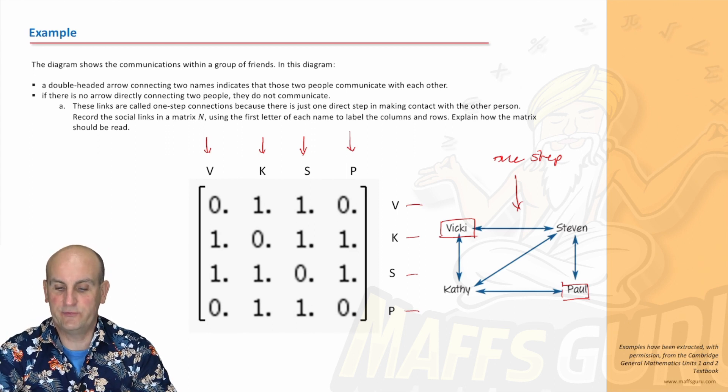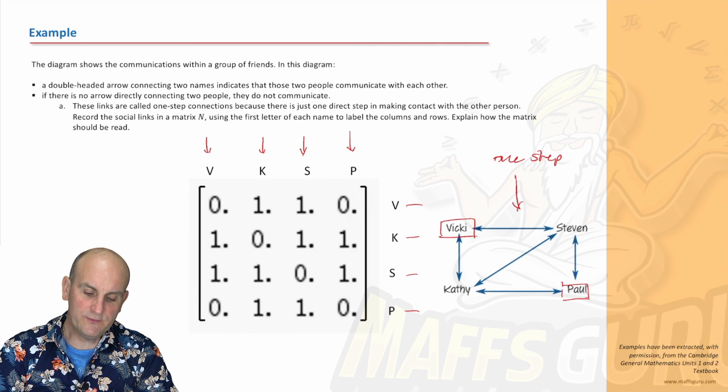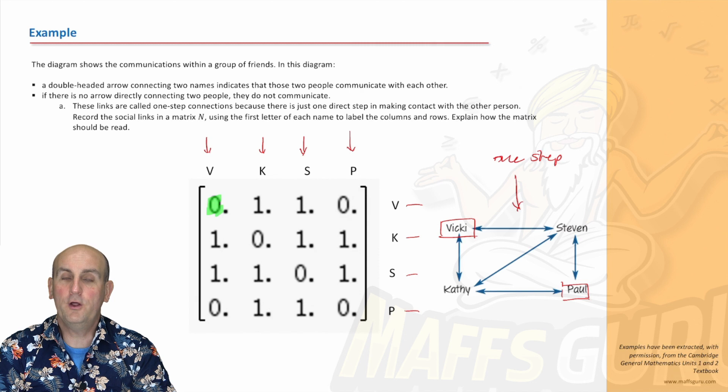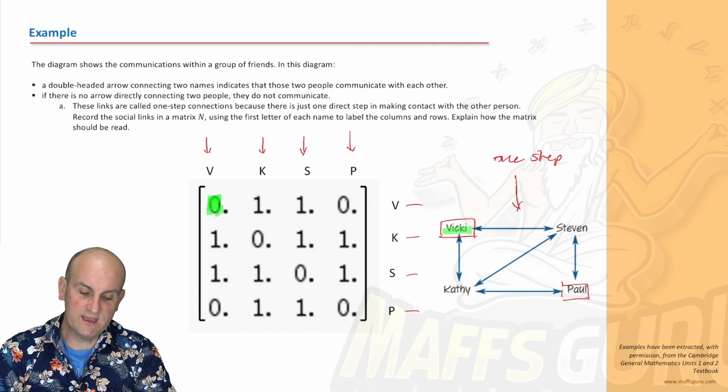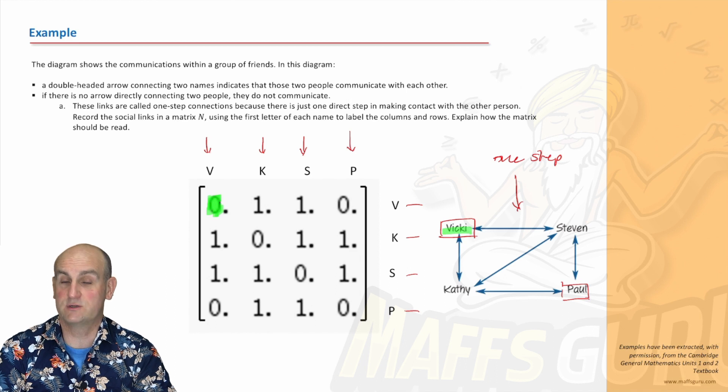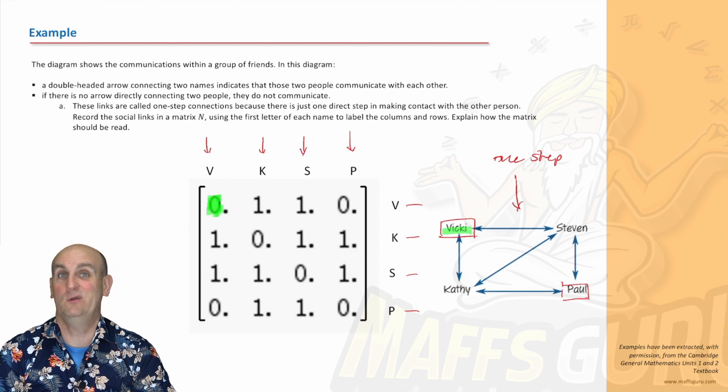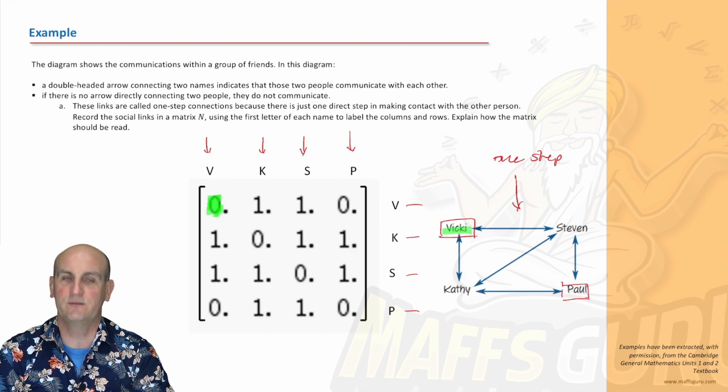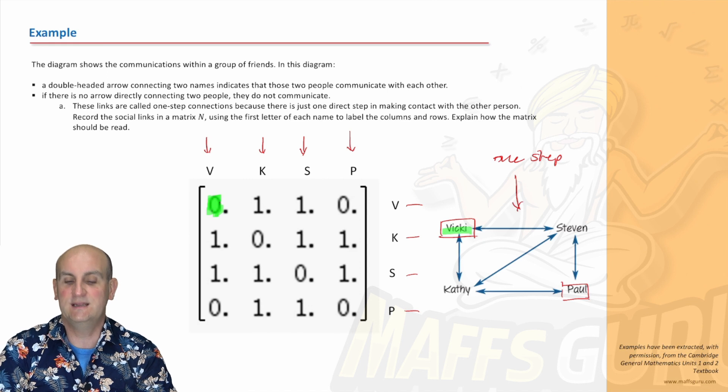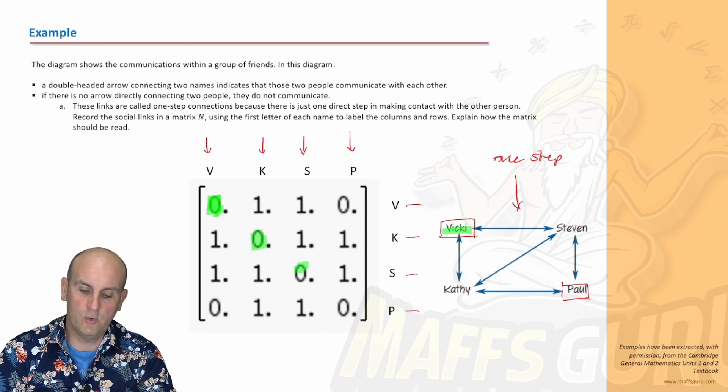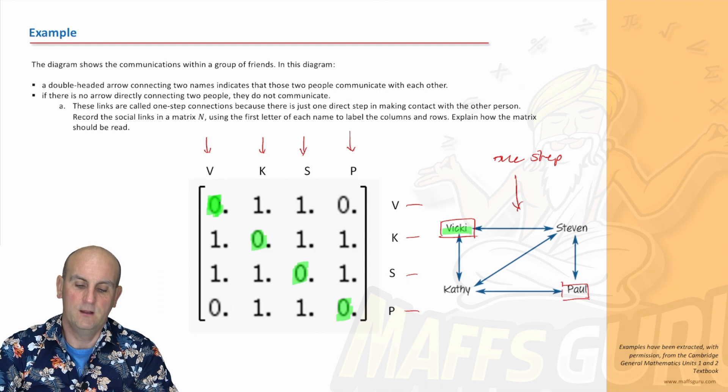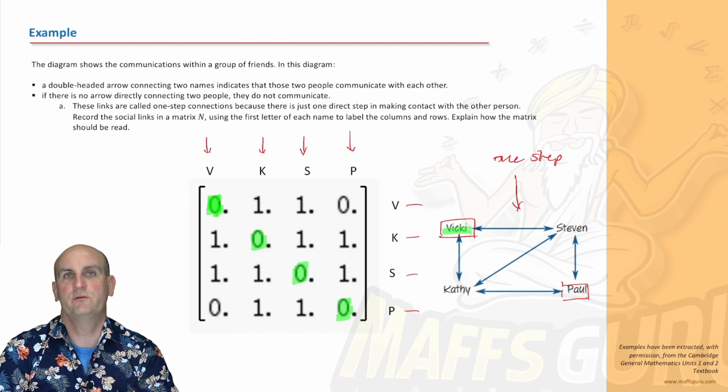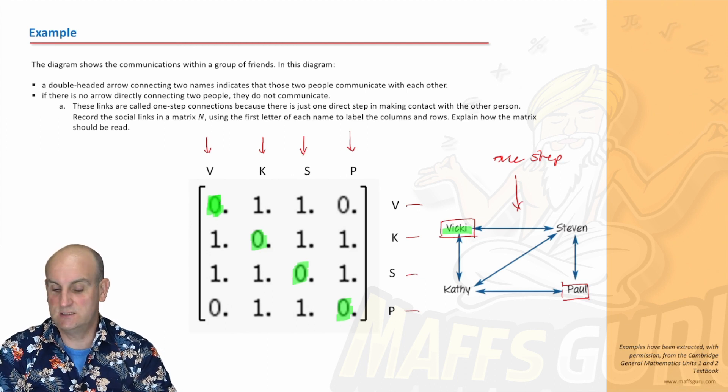Let's go through a couple of examples. If we look at this zero here, remember a zero means there is no connection. Because it's Vicky connecting to Vicky, that means Vicky talks to herself. Obviously we don't really want anyone talking to themselves. If we notice all the way down here, Kathy doesn't talk to Kathy, Stephen doesn't talk to Stephen, and Paul doesn't speak to Paul.